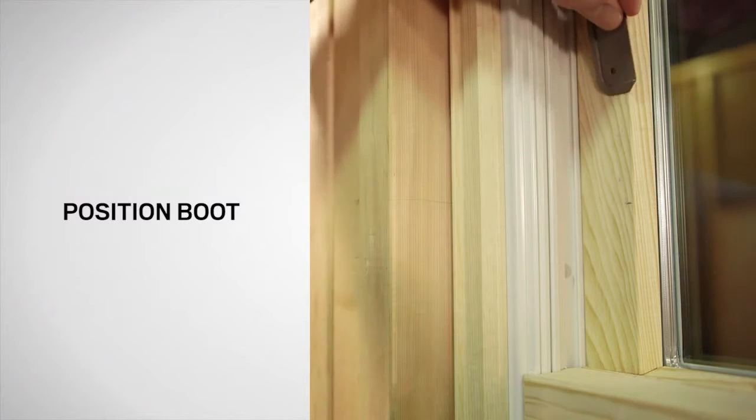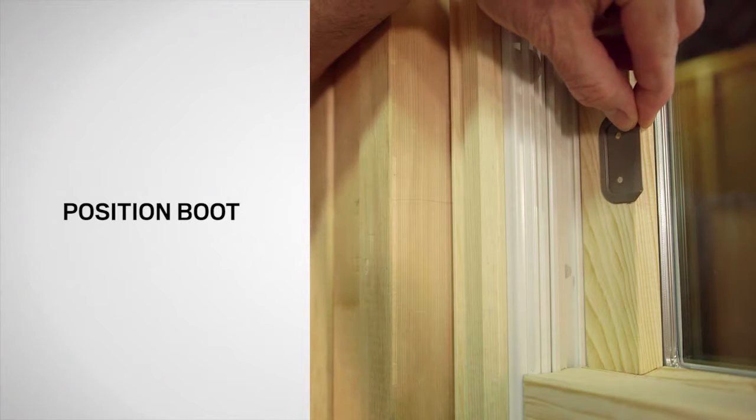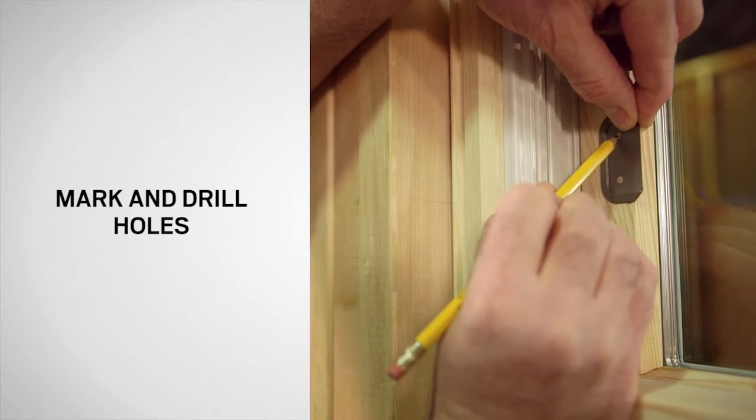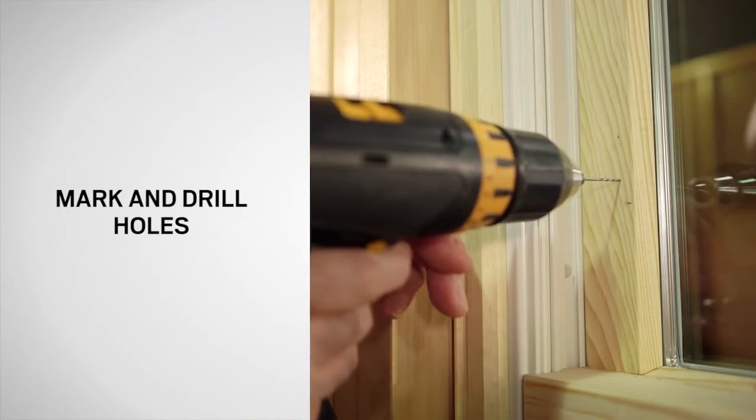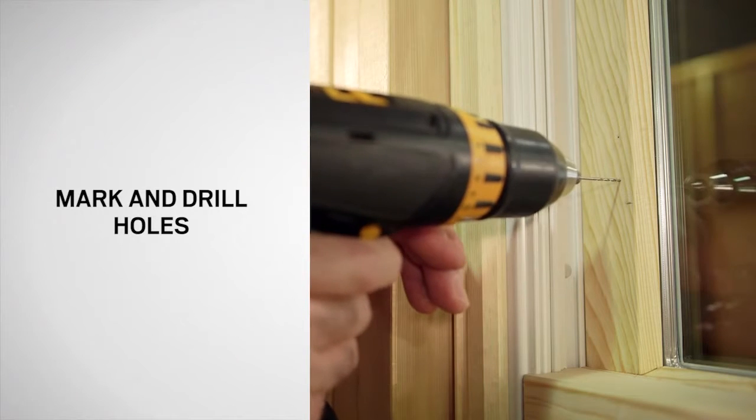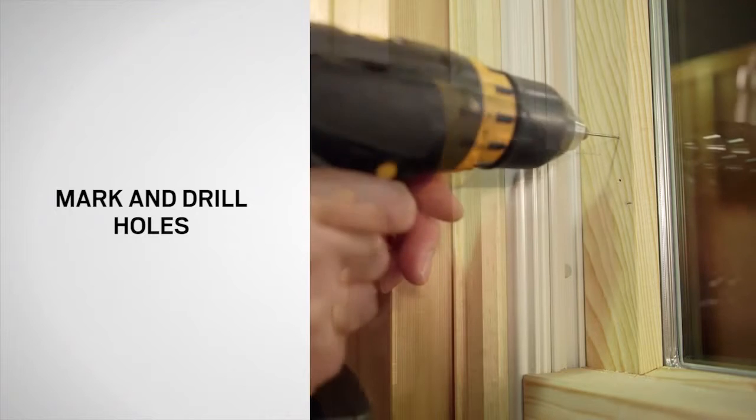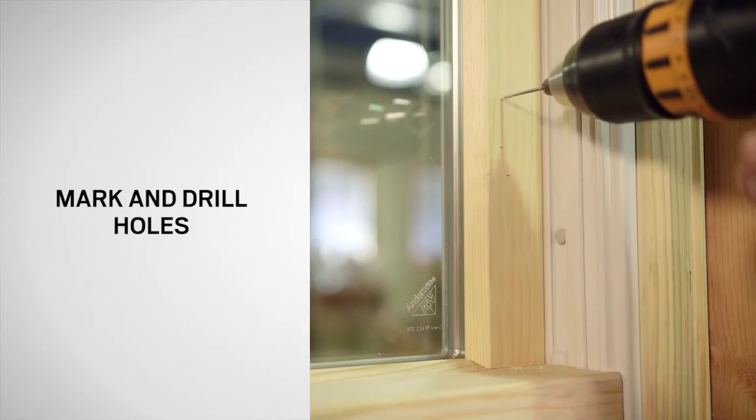Position the boot tight to the glass lip on the top sash, aligning the bottom of the boot with the pencil mark. Mark the hole locations. Using a 1/16 inch bit, drill a hole one-half inch deep at the marked locations. Repeat for the opposite side.